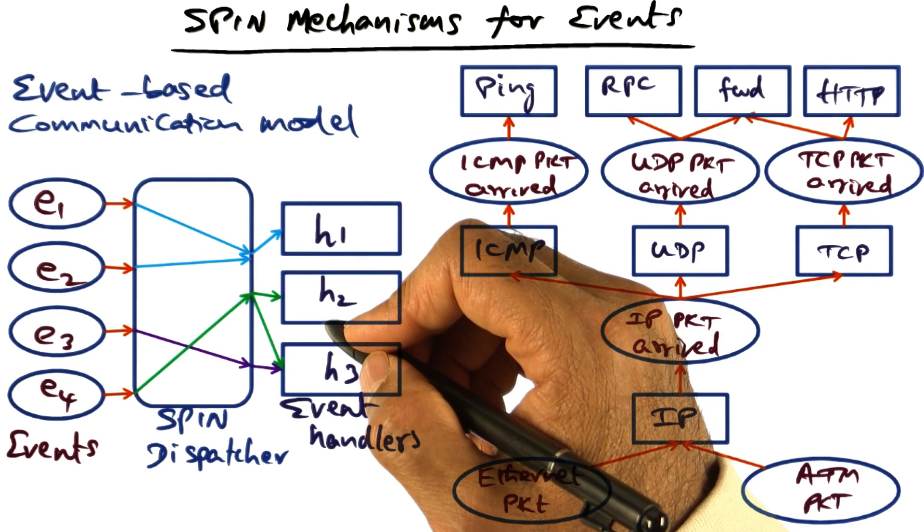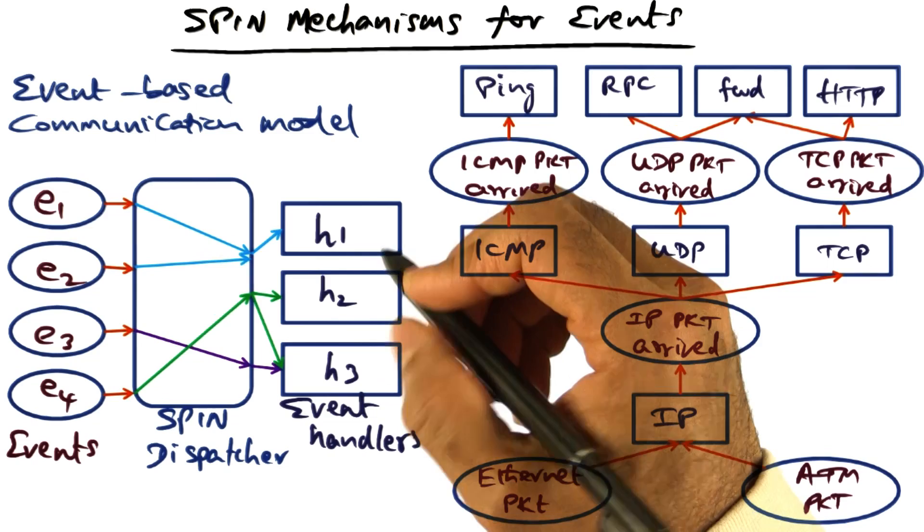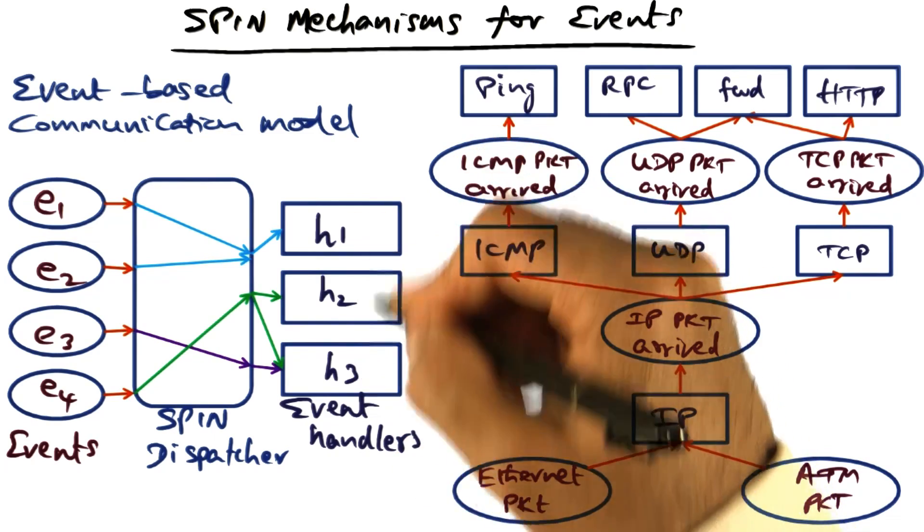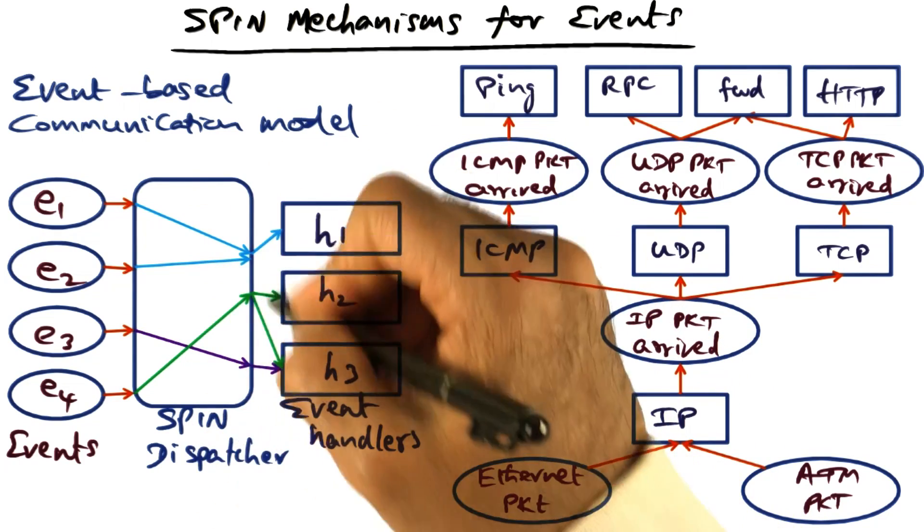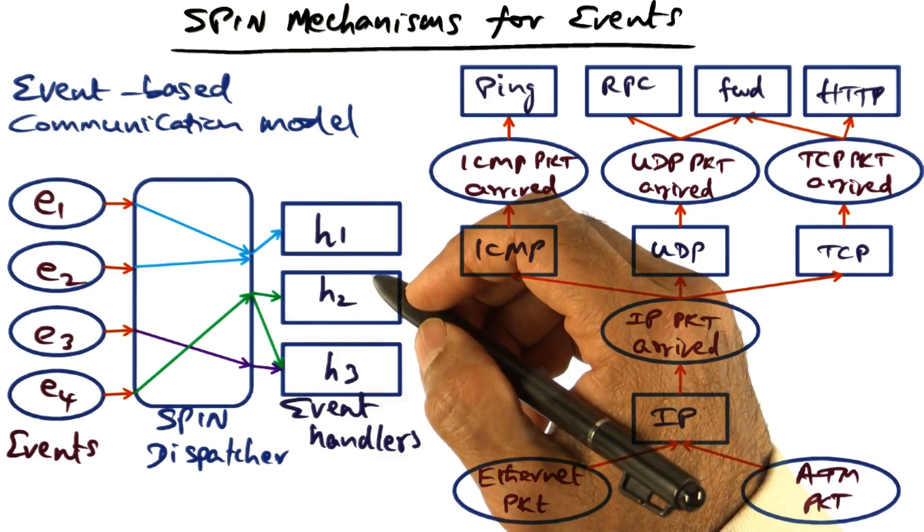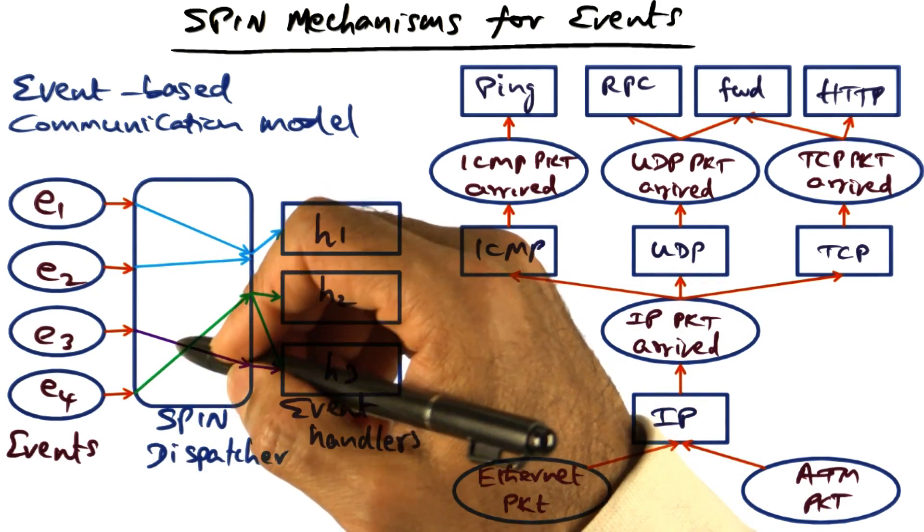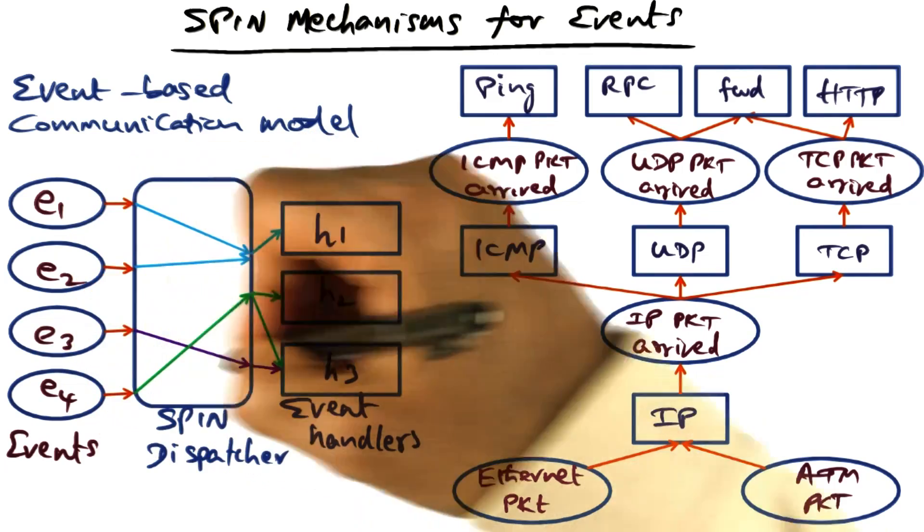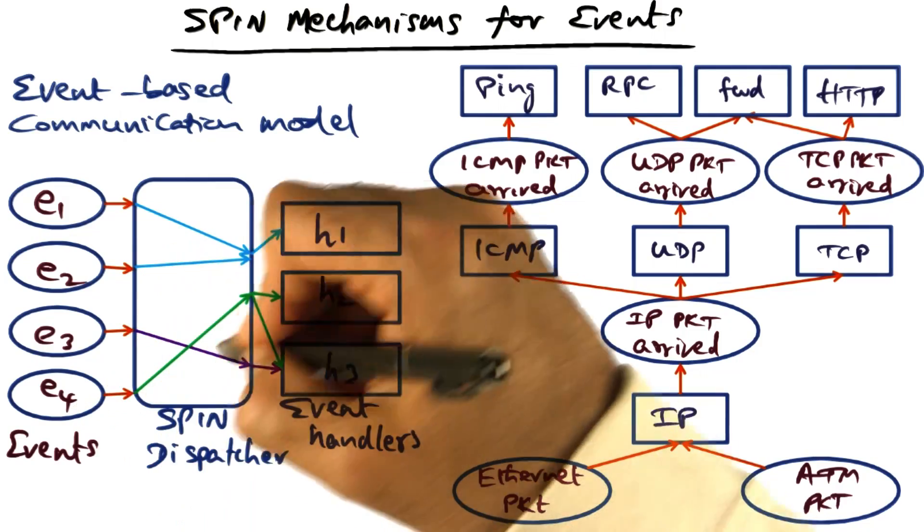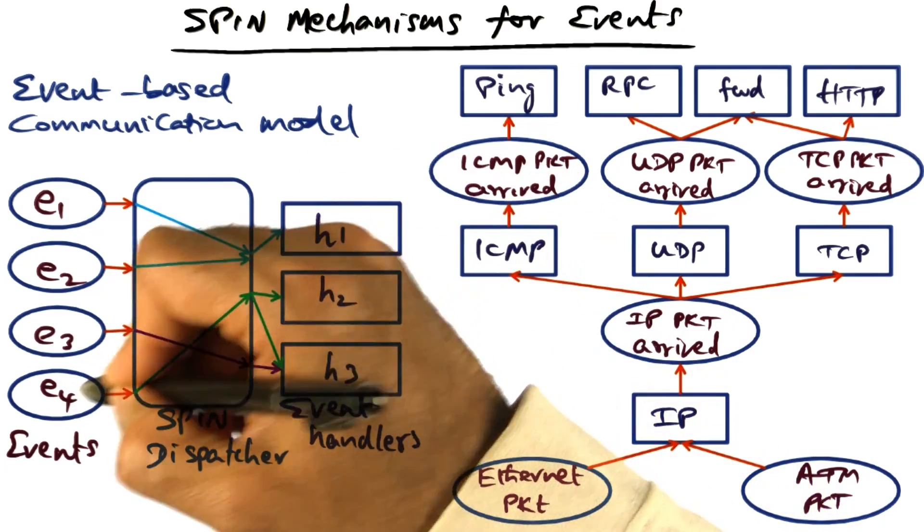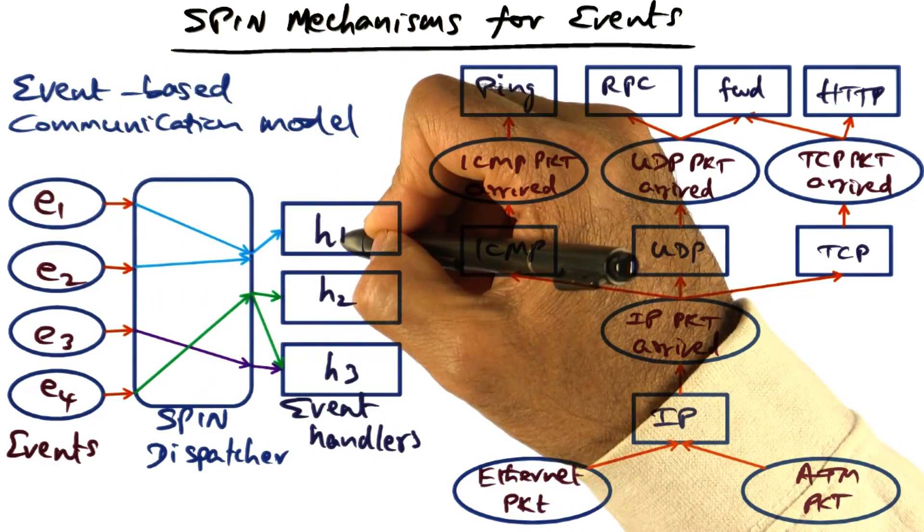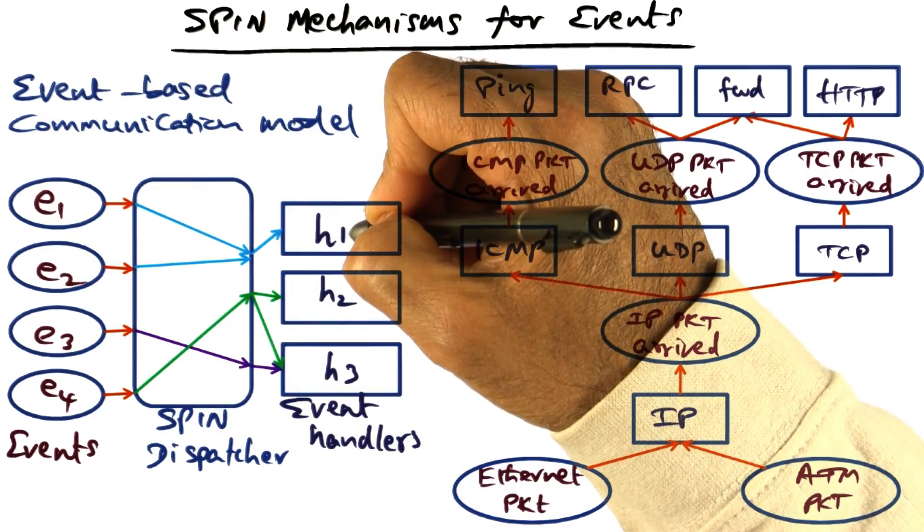SPIN supports such external events using an event-based communication model. Services can register event handlers with the SPIN event dispatcher. SPIN supports several types of mapping: one-to-one mapping between an event and a handler, one-to-many mapping between an event and multiple handlers, and many-to-one mapping where many events may map to the same handler.